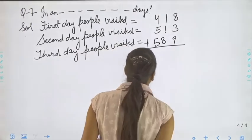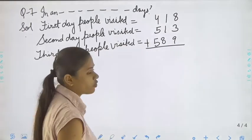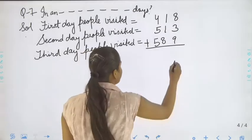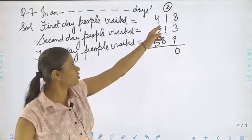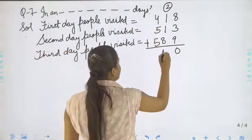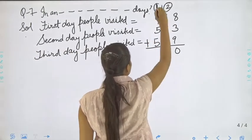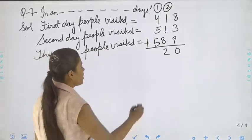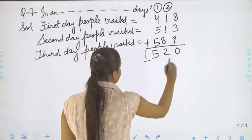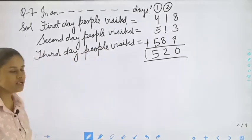Again, 9 plus 3 it will be 12, 12 plus 8 it will be 20. 2 plus 1 is 3, 3 plus 1 is 4, 8 plus 4 it will be 12. 4 plus 1 is 5, 5 plus 5 is 10, 10 plus 5 is 15. That is 1520.